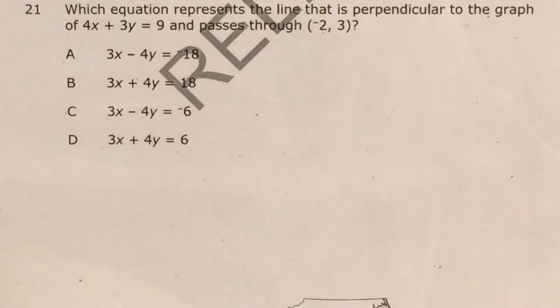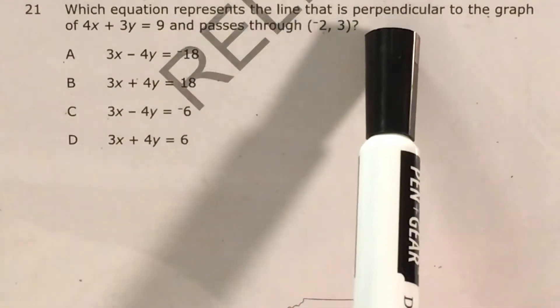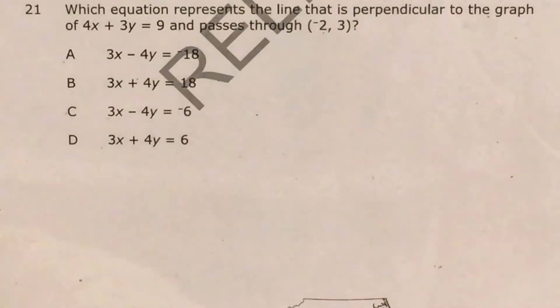What's up math scholars and math haters? This is Mr. W. Today we're going to tackle question 21 in the Math 1 questions that North Carolina released this past school year. We can see that we're just trying to figure out which of our answer choices represents the line that is perpendicular to the graph of this linear equation and passes through this point.